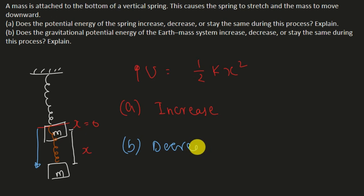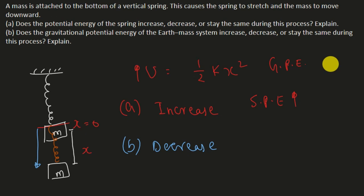So from an energy perspective, the spring potential energy increases while the gravitational potential energy of mass block m decreases. This energy is basically converted — gravitational PE decreases and spring PE increases. Now, move on to the next question.